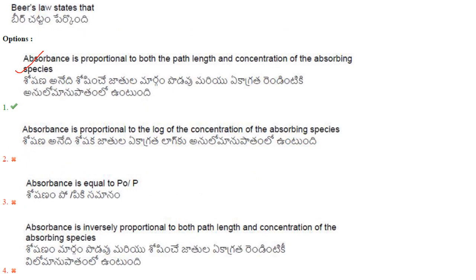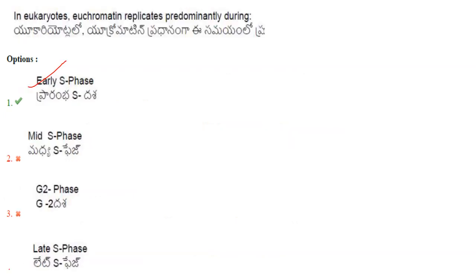Beer-Lambert Law states that absorbance equals epsilon times concentration times path length (A = εcl). Absorbance is proportional to both the path length and concentration of the absorbing species — that is correct, answer is option 1. In eukaryotes, euchromatin replicates predominantly during the early S phase — answer is option 1.